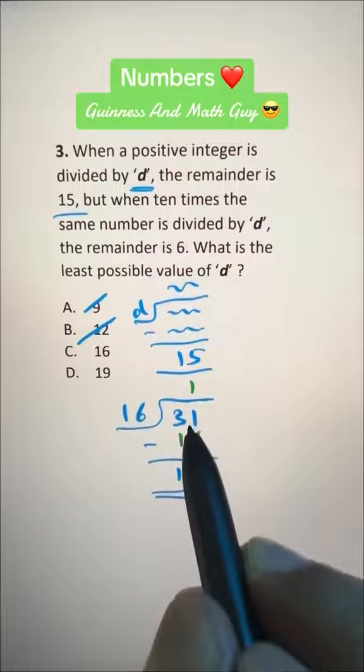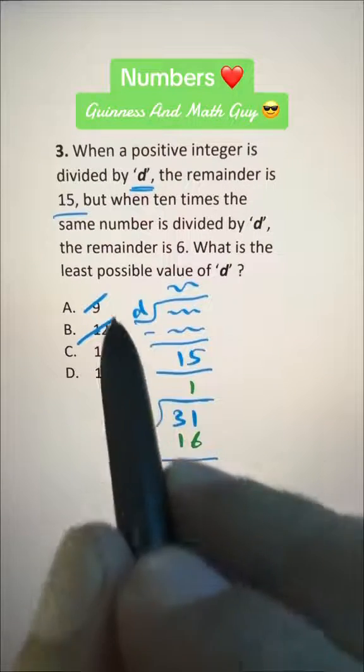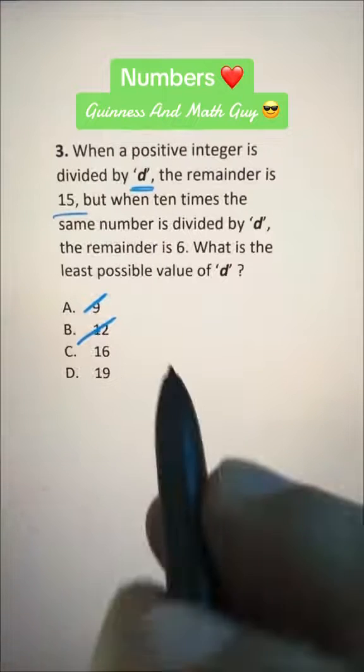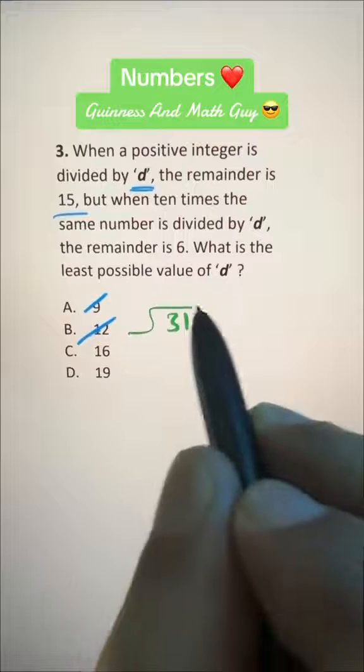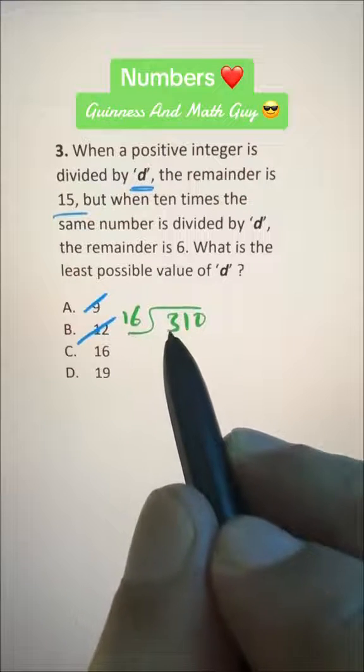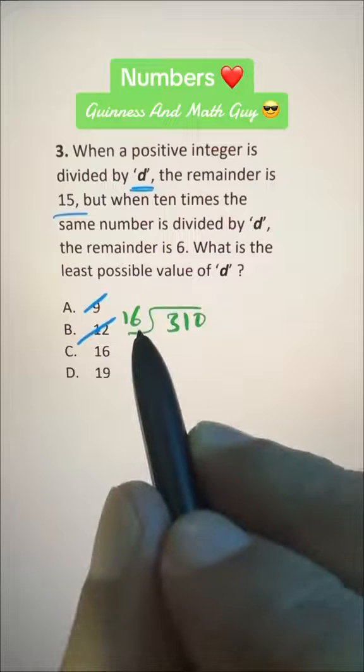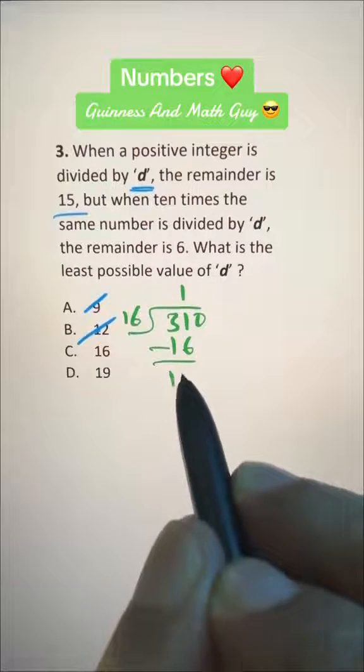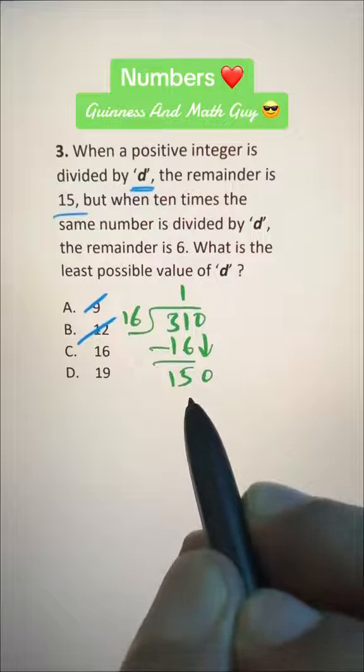So 10 times this number, 31, will be 310. When we're dividing this by 16, we're checking answer C. 16 times 1 is 16. We have 15 as a remainder. We bring this 0 down to make it 150.